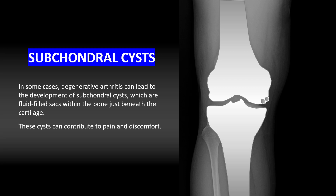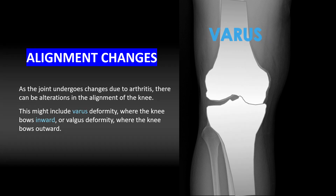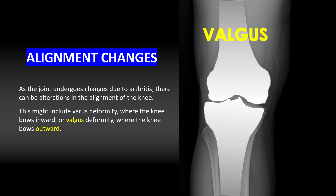In some cases of degenerative arthritis, you can see the development of subchondral cysts or geodes, which are fluid-filled sacs within the bone just beneath the cartilage. These cysts can contribute to pain and discomfort. There can also be alterations in the alignment of the knee, including a varus deformity where the knee bows inward, or a valgus deformity where the knee bows outward.